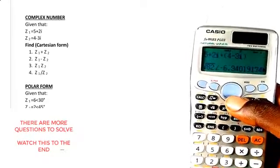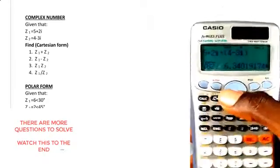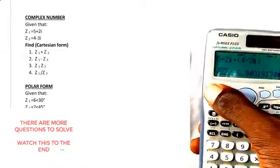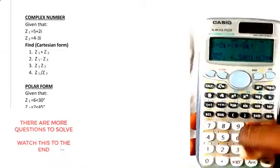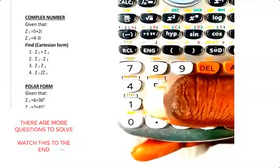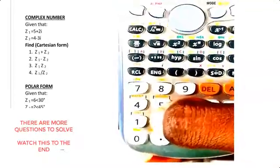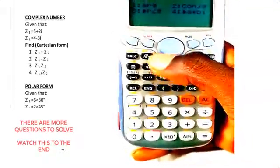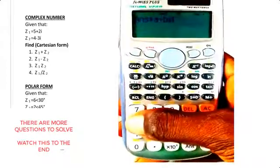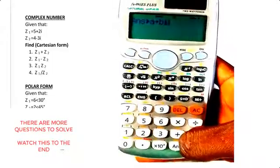However, you can change it to Cartesian form by simply pressing Shift, then you come here where you have 1, press 2, then you change it to Cartesian form—that's 4—then equals to get your answer in Cartesian form. You have 9 - i.